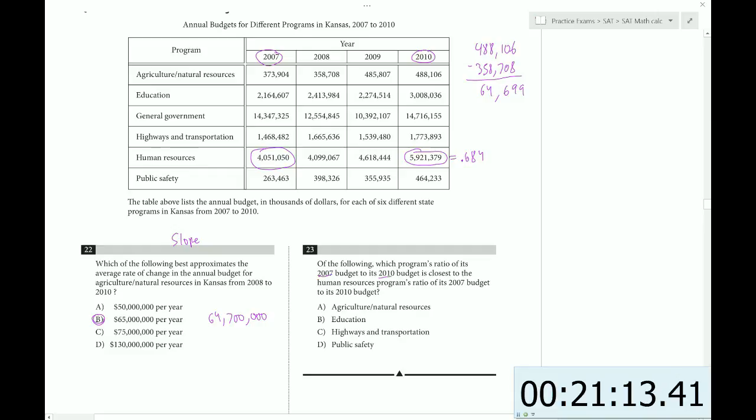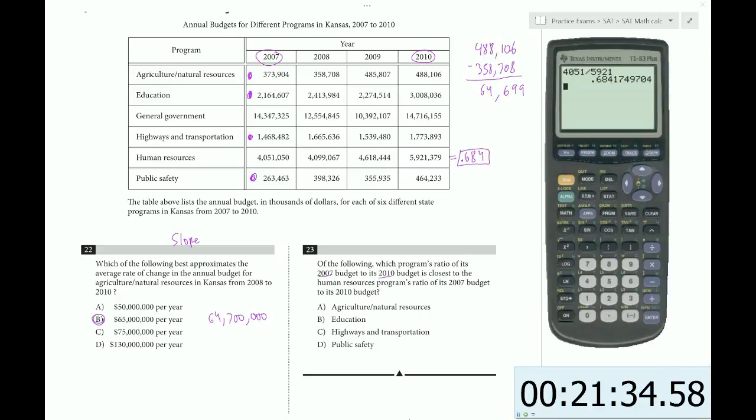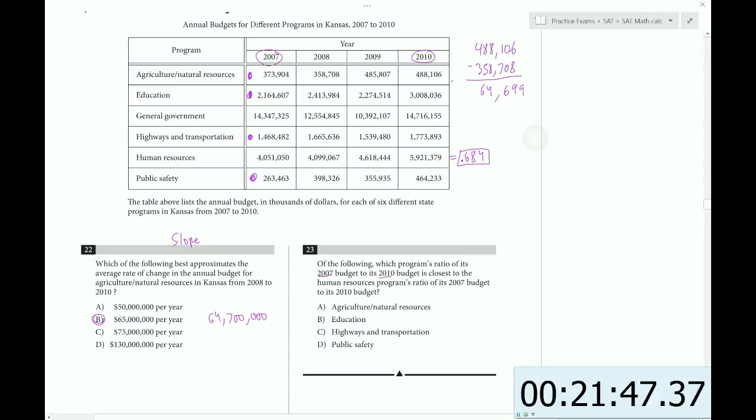And now we can just run through the other choices here. So we need to do education, agriculture natural resources, highways, and public safety. We're looking for the one that's closest to 0.684. We'll start with the top, 373,904, divided by 488,106. We get 0.766.